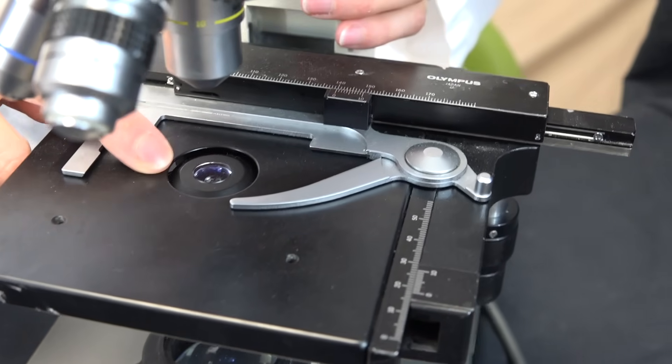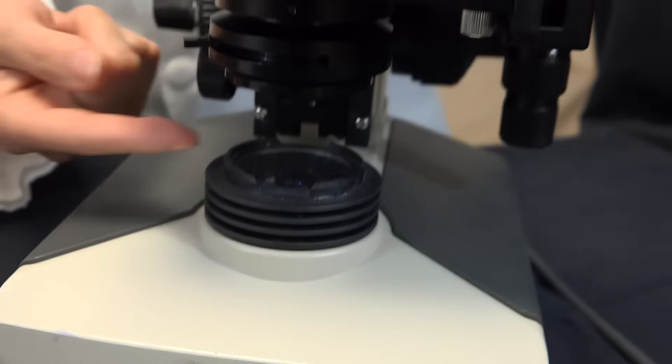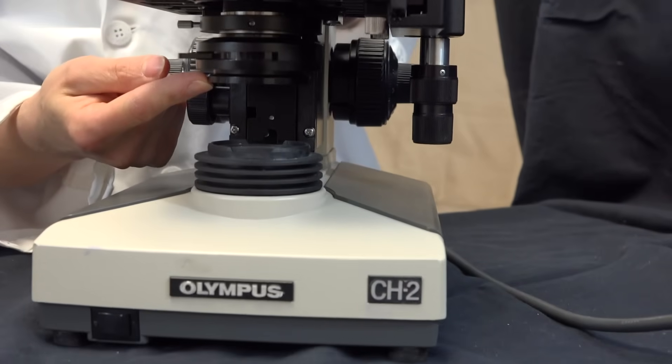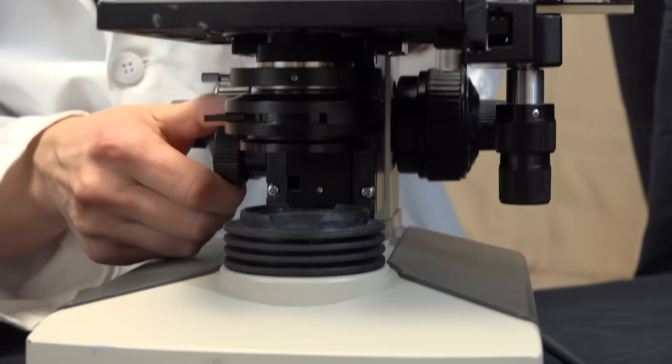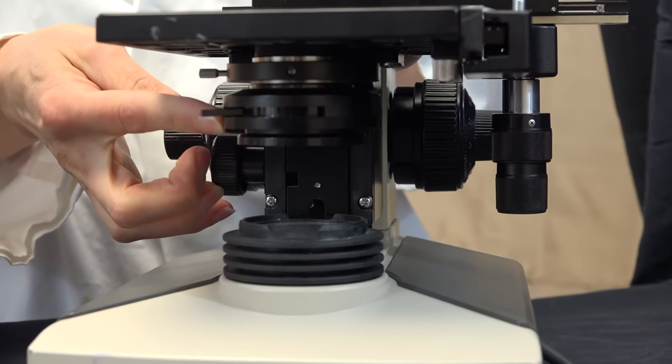In the center of the stage there's a hole and underneath this hole is the condenser. If we look underneath the stage, you see the condenser is up here. The condenser can be controlled and moved up and down, but for most applications all the way to the top is the best position.